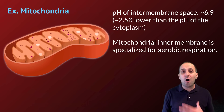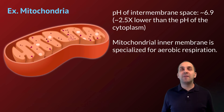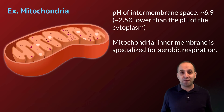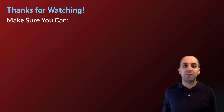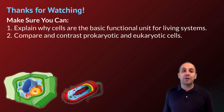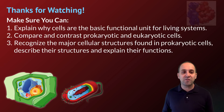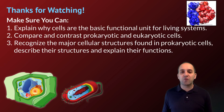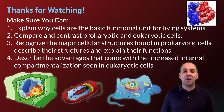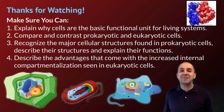This of course extends to all of the processes that occur inside a eukaryotic cell. It's compartmentalization that gives eukaryotic cells the ability to specialize into all the different varieties that make up the eukaryotic domain of life. Thanks for watching our discussion of prokaryotes and eukaryotes. Make sure you can explain why cells are the basic functional unit for living systems, compare and contrast prokaryotic and eukaryotic cells, recognize the major cellular structures found in prokaryotic cells and describe their structures and functions, and describe the advantages that come with the increased internal compartmentalization seen in eukaryotic cells.